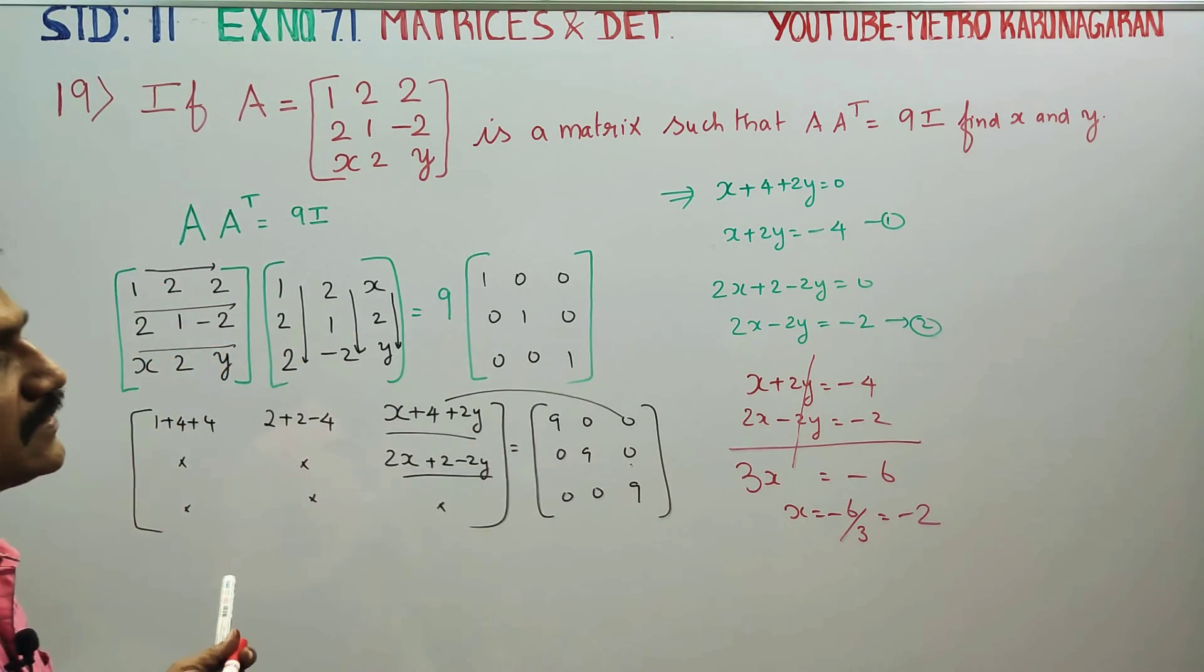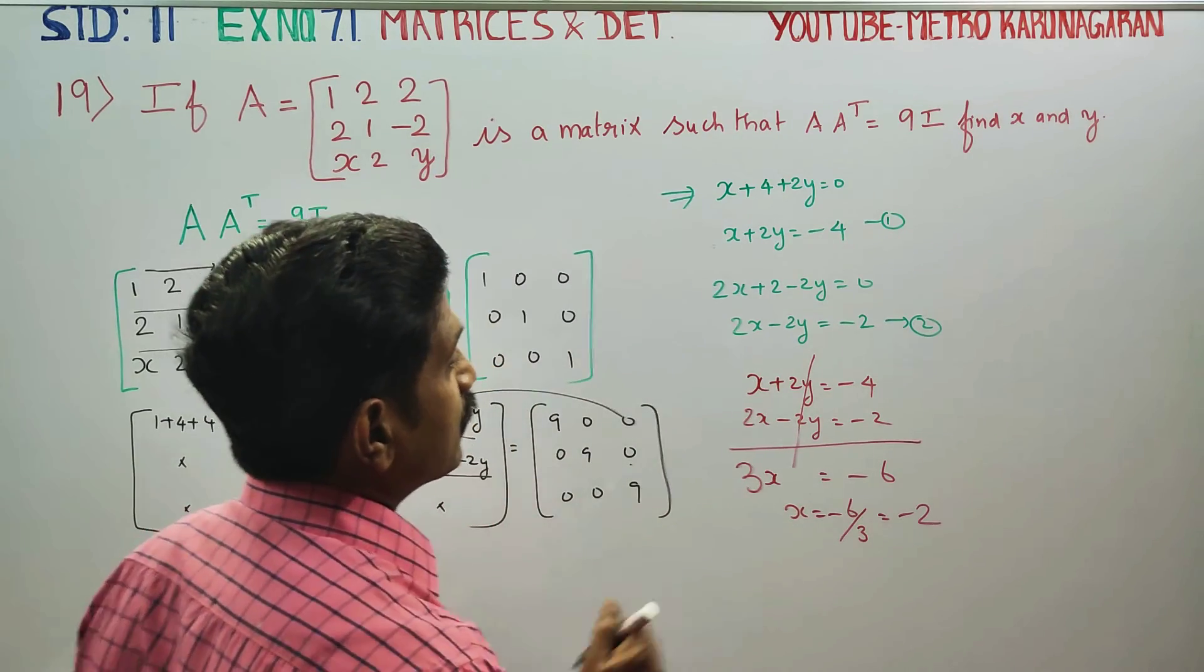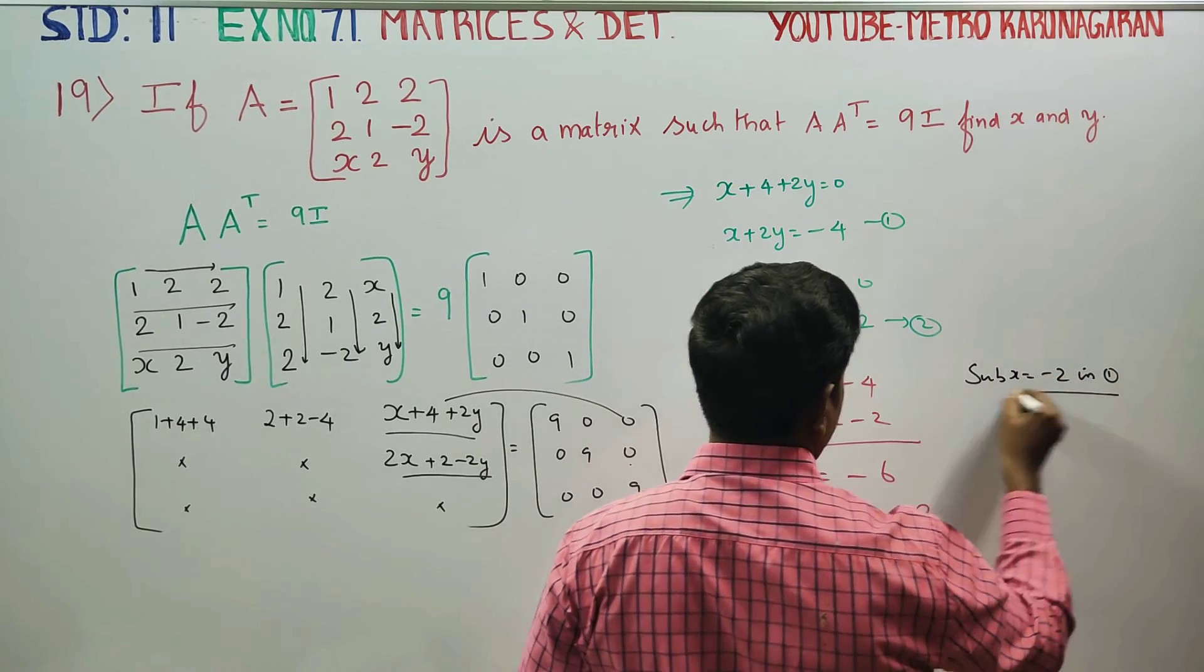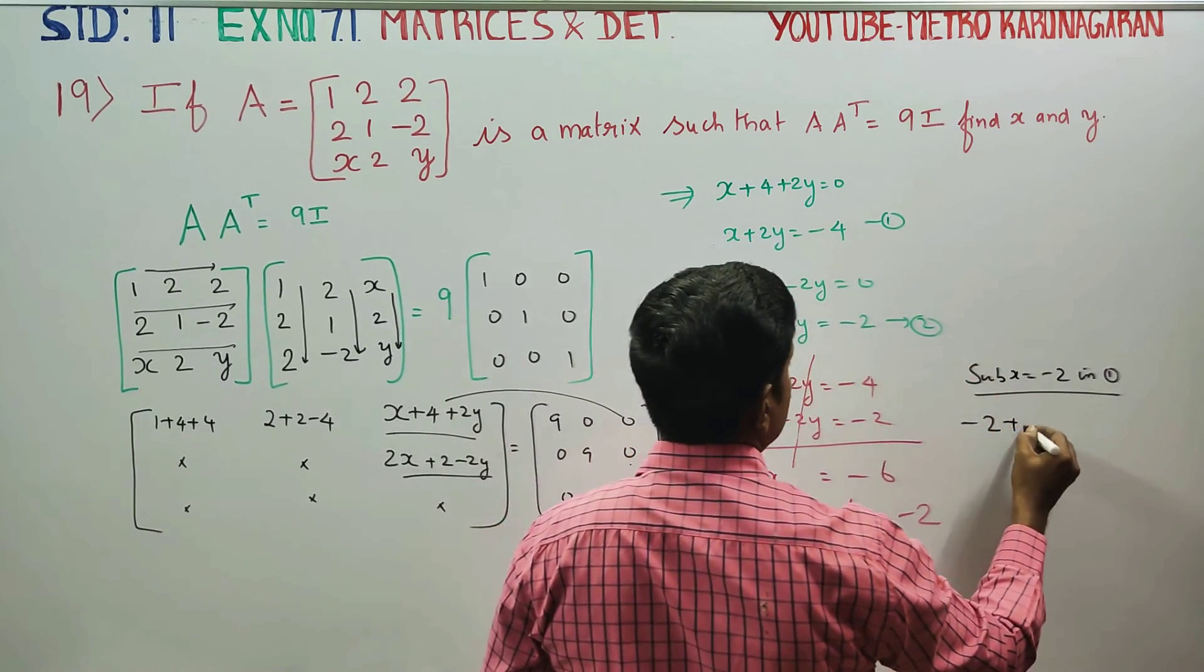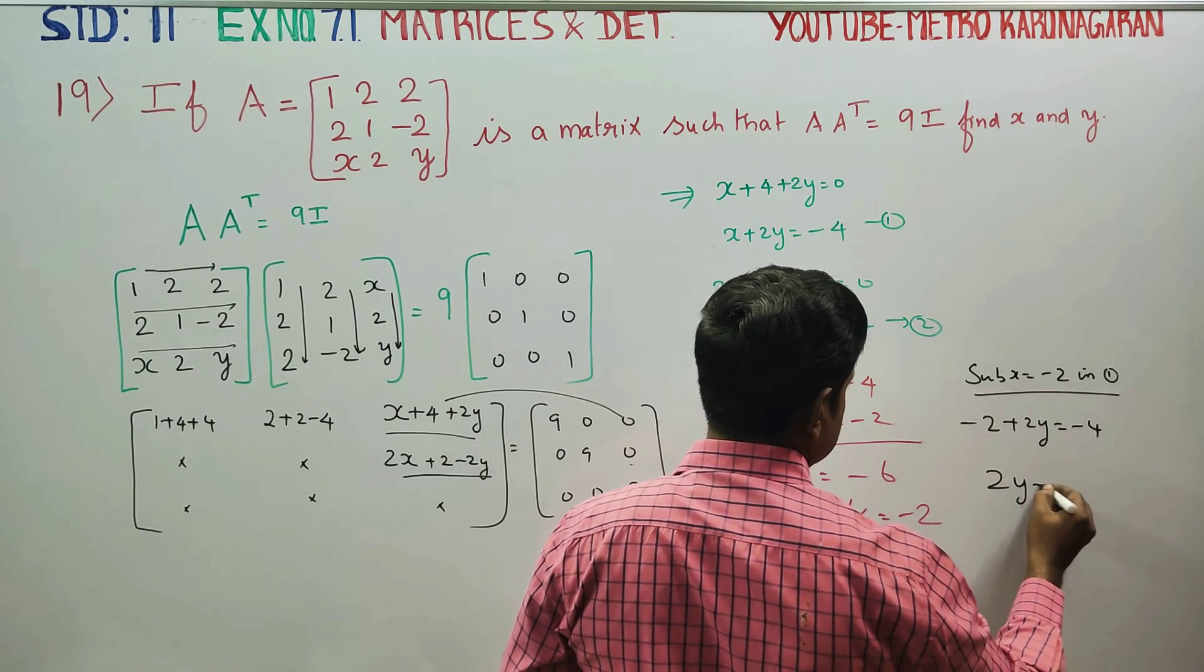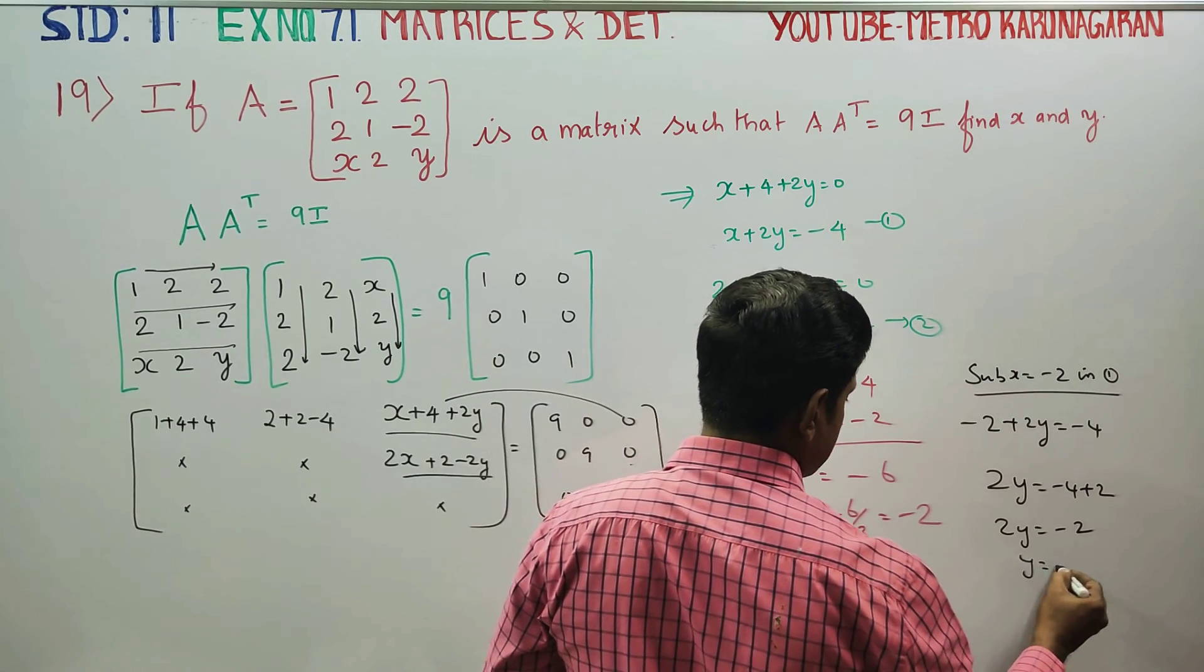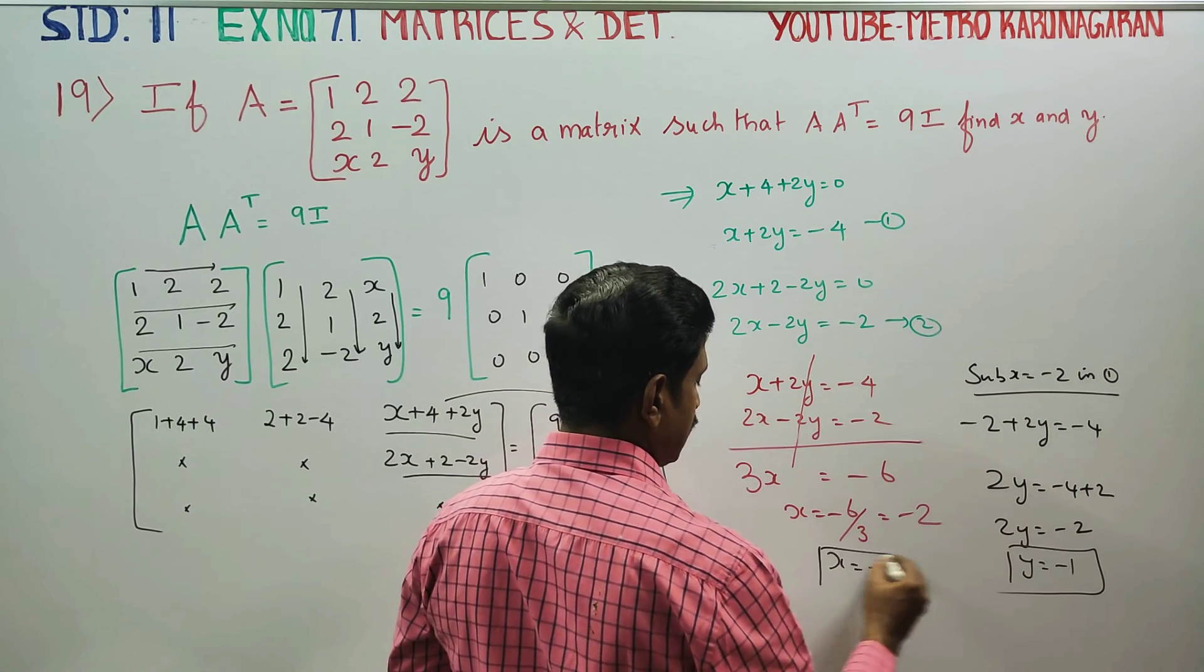Substitute x is equal to minus 2 in equation number 1. Equation number 1, minus 2 plus 2y is equal to minus 4. 2y is equal to minus 4 plus 2. 2y is equal to minus 2. y is equal to minus 1. Now, this is x and this is y is equal to answer.